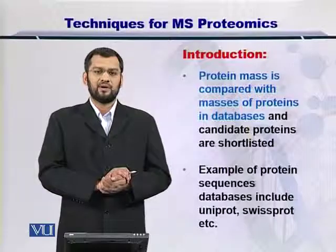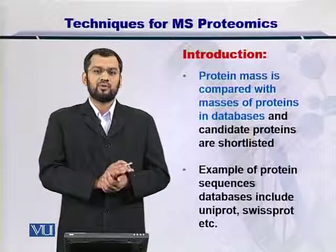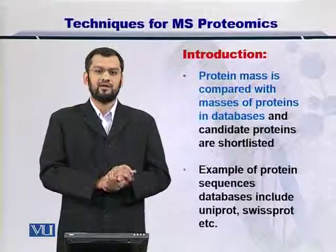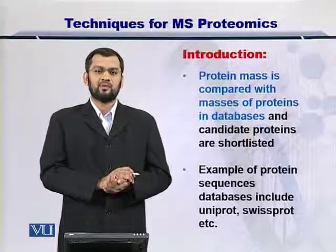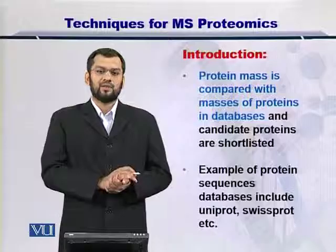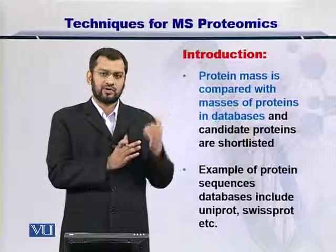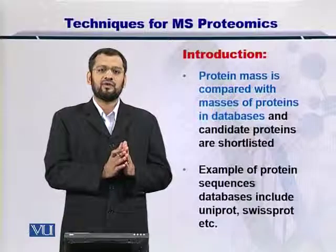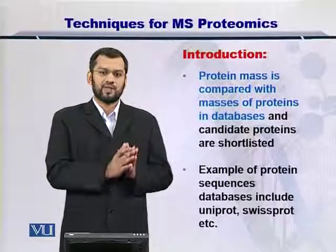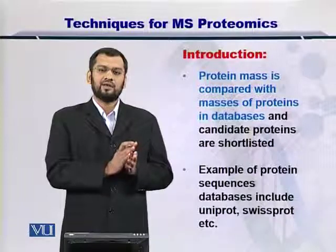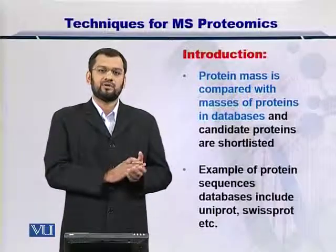The protein mass — or the peptide mass for that matter — once measured, can then be compared with the protein sequence databases and the proteins that are there in these databases. Of course, we can compute the molecular weight of a protein if we have its sequence, which is simply adding up the molecular weight of all the amino acids within the protein. So once you have the molecular weight of a protein from the protein database, you can compare this mass with the mass of the protein that has been output by the mass spectrometer. If these two masses or molecular weights are matching, then you can assume that the protein in the mass spectrometer chamber is the same as the protein from the database.